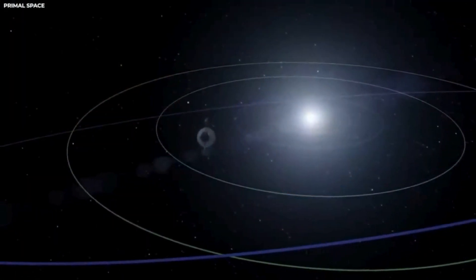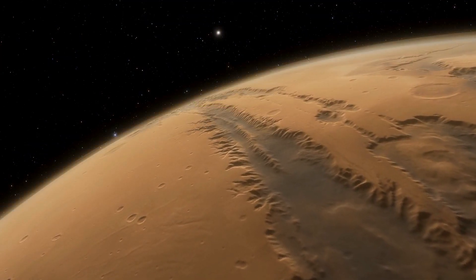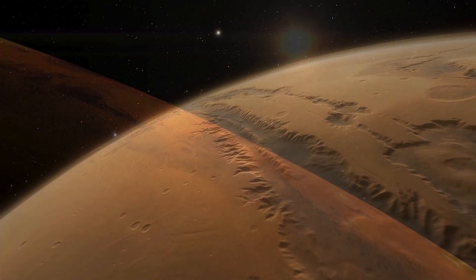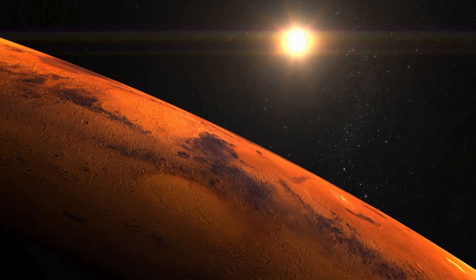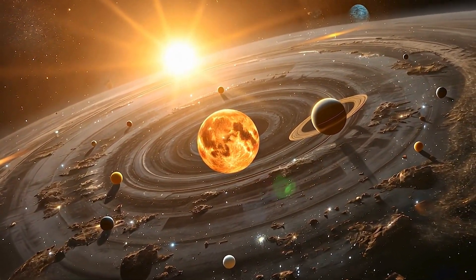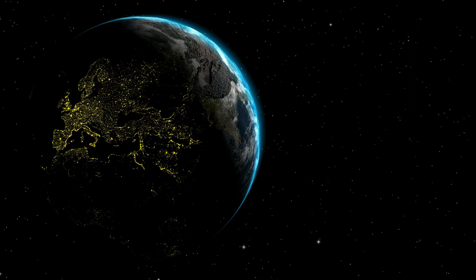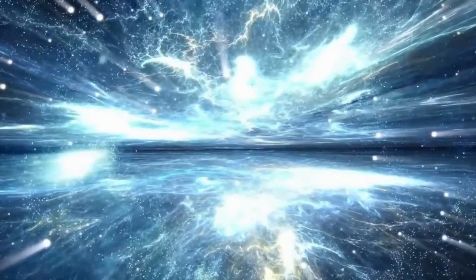NASA estimates that Voyager 1's mission will conclude by 2030. With its power reserves dwindling, the agency has been systematically shutting down non-essential components to conserve energy. For instance, the heater for the cosmic ray detector was turned off in 2019. NASA plans to gradually deactivate the spacecraft's remaining instruments, prioritizing those contained within the spacecraft's body, which benefit from excess heat generated by its CPUs.